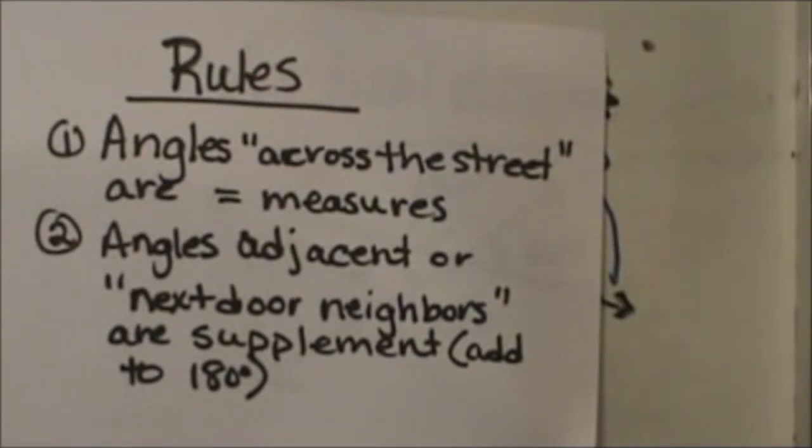Angles that are across the street neighbors are congruent and that's what a vertical angle is. Then angles that are adjacent or next door neighbors are supplementary or they add up to 180.